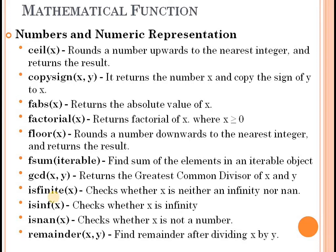The first category is numbers and numeric representations. The first function is ceil(x) — it rounds a number upwards to the nearest integer and returns the result. The next is floor(x) — it rounds a number downwards to the nearest integer.